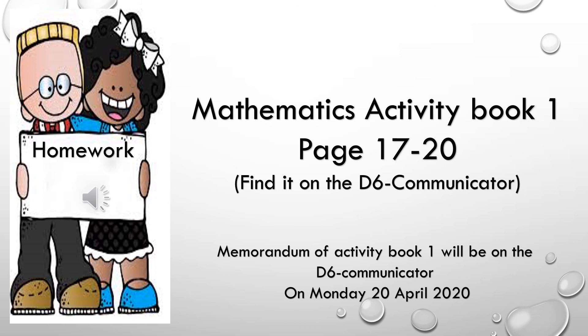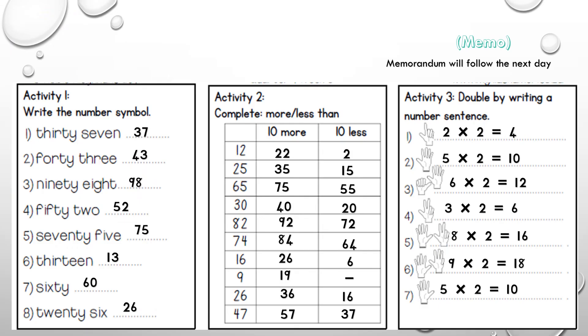Some important information: the memorandum of Activity Book 1 will be on the D6 Communicator on Monday, 20 April 2020, for you to go look at and see what you can do, where you did something wrong, or do some revision. Also, you have your Mental Maths Memorandum that you can mark from what you had to do yesterday. Just go through the answers, see where you did something wrong so that you can correct it, or do revision to make sure you understand what you did wrong and how to fix it.